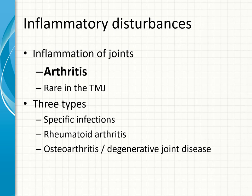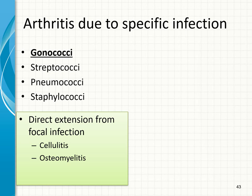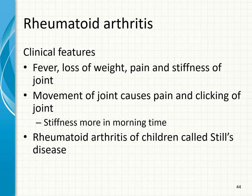Inflammatory disturbances — arthritis — are very rare in the TMJ. They can be due to specific infections or rheumatoid arthritis or degenerative joint disease. Gonococcal infection is notorious for causing TMJ arthritis. Other organisms include streptococci, pneumococci, and staphylococci, spreading via direct infection or from cellulitis or osteomyelitis. Clinically there is limited mobility, pain, and tenderness on palpation. On healing, fusion of the joint may lead to ankylosis with complete destruction of articular cartilage and scar formation — cicatrix.